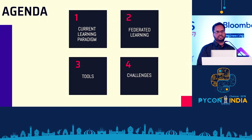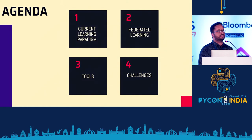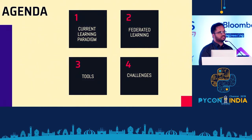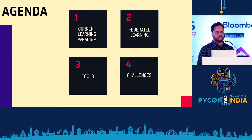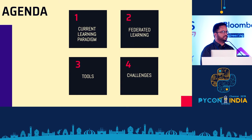The agenda falls in four different steps. First, we'll talk about how currently machine learning happens and the current challenges that it has. We motivate this and introduce what federated learning is. I then give an overview of what tools are there to do federated learning, and what challenges and ways forward exist for this.